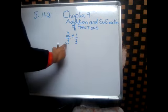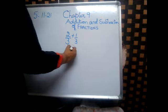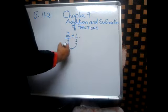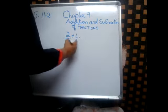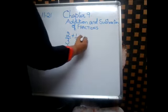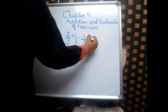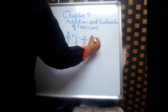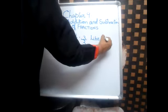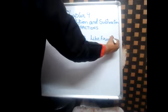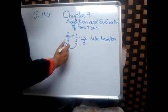Here, the denominators are same. The denominators are same, as such it is called a like fraction and the answer is 3 by 3 or 1. This is a like fraction. The addition is very easy because the denominators are common and you add the numerators.